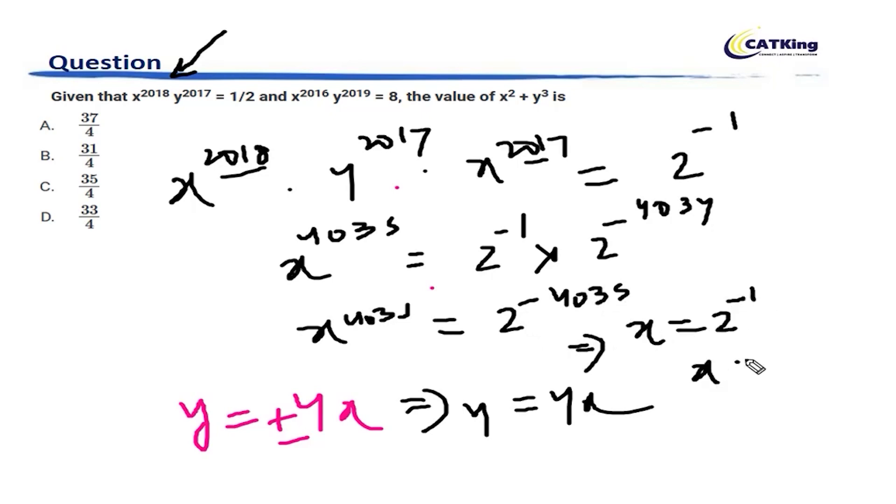So, x is equal to 1 by 2 and if you put it here, y becomes equal to 2. So, now with x is equal to half and y is equal to 2, you can really put it here. x square becomes 1 by 4, y cube becomes 8 and the value becomes 33 by 4.